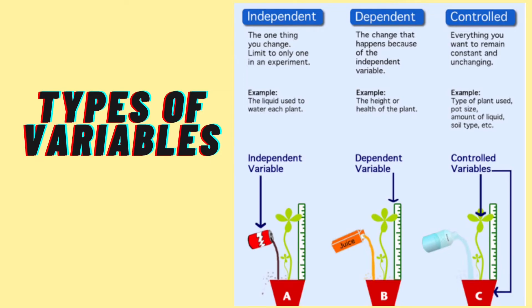An independent variable is a factor or condition that is intentionally changed by an investigator in an experiment. It is the cause, and its value is independent of the other variables in the study. The dependent variable is a factor or condition that might be affected as a result of that change — it is the effect, and its value depends on changes in the independent variable. A variable that is not changed is called a controlled variable; these factors are kept constant to determine any changes in the result.